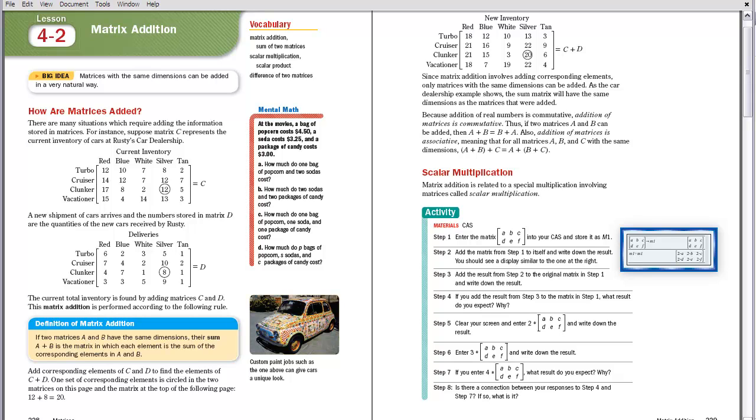And you can see here that I have two matrices. One of them represents current inventory of different cars, and the other one is the deliveries that were made of the cars in stock. So what we need to do is we want to add the deliveries to our current inventory so we have a new inventory.